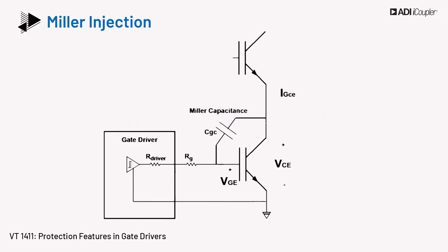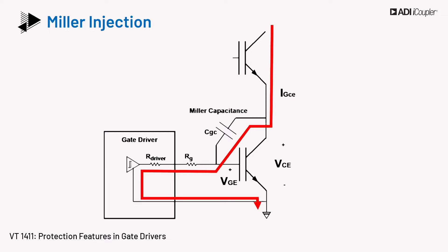Consider the typical half-bridge topology with IGBTs. The low side switch is shown more elaborately, indicating the internal gate-to-collector capacitance, CGC, which is the Miller capacitance.